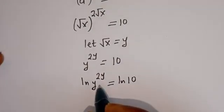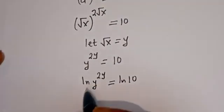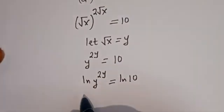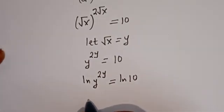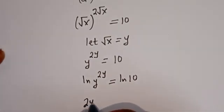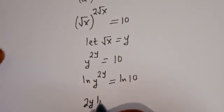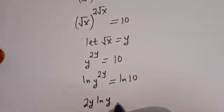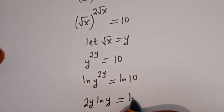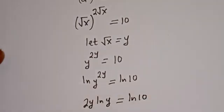Now this can be written as 2y times ln of y is equal to ln of 10.